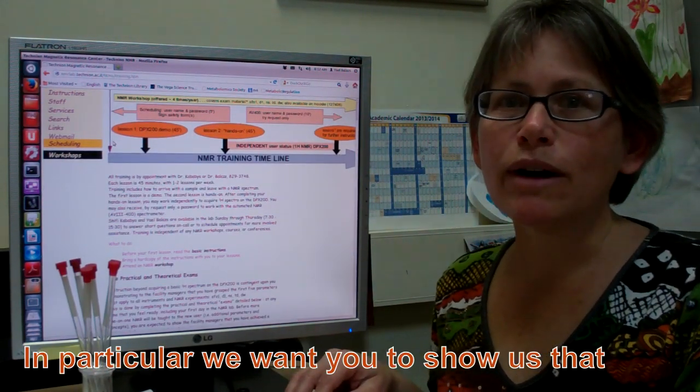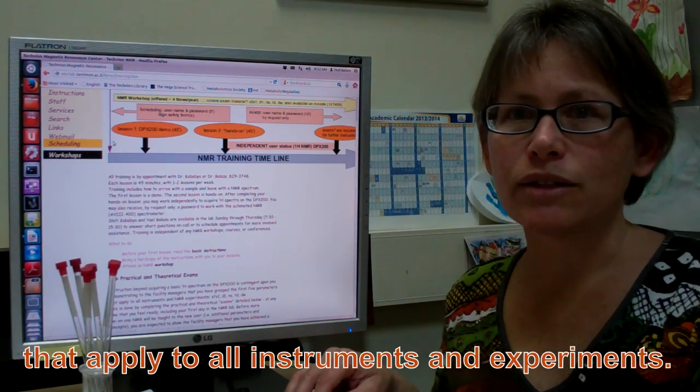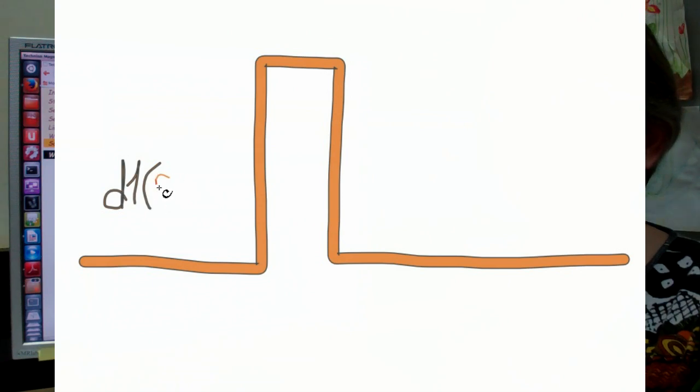In particular, we want you to show us that you have grasped five key parameters that apply to all instruments in NMR experiments. These are number 1, D1, the first delay with a default in seconds.